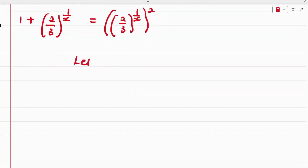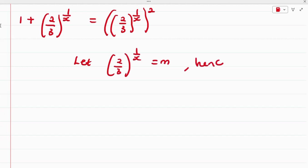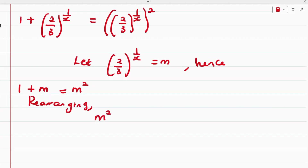At this point, let (2/3) raised to the power of 1/x equal m. Substituting, the equation becomes 1 plus m equals m squared. Rearranging and setting equal to zero, we have m squared minus m minus 1 equals zero.